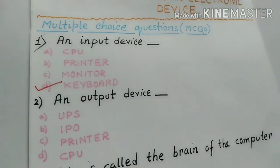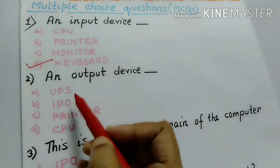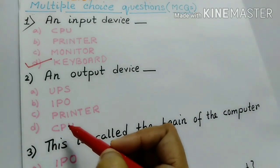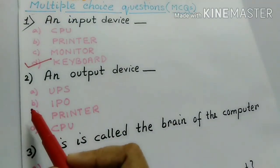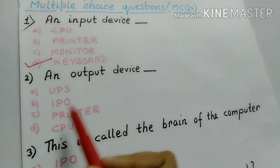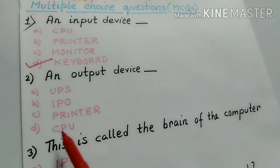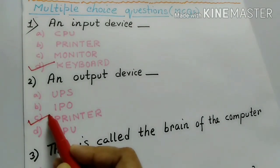Number 2. An output device. So you have to take the output device. Here also we are having four options. Number A, UPS, Number B, IPO, Number C, Printer, Number D, CPU. So which one is the output device here? Printer.